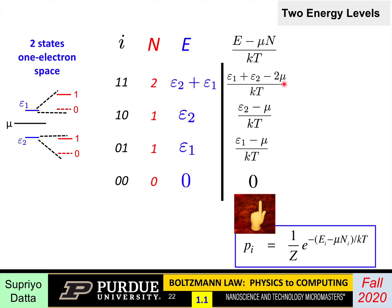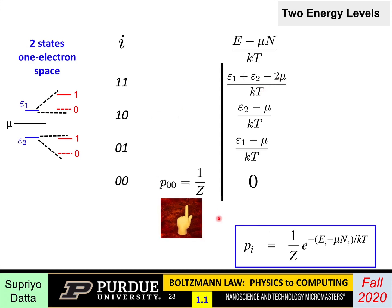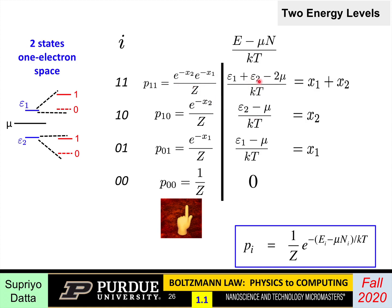Writing the probabilities: p_00 is one over Z; p_01 is e to the power minus x_1 over Z, where x_1 denotes (epsilon_1 minus mu)/kT; p_10 is e to the power minus x_2 over Z. For p_11, the exponent is the sum of x_1 and x_2, so p_11 is e to the power minus x_2 times e to the power minus x_1, all divided by Z.